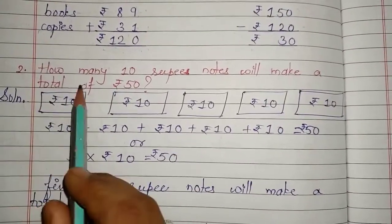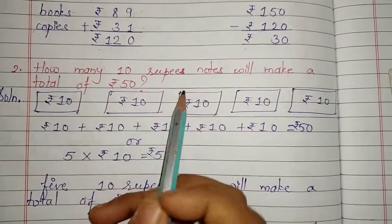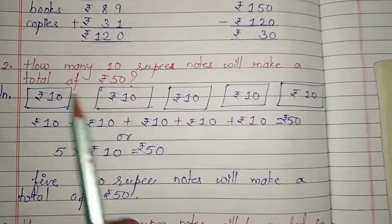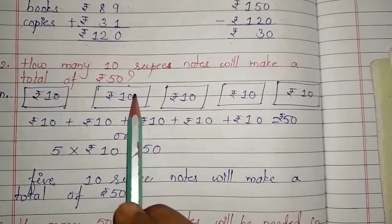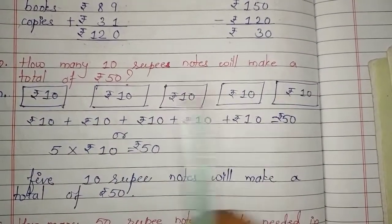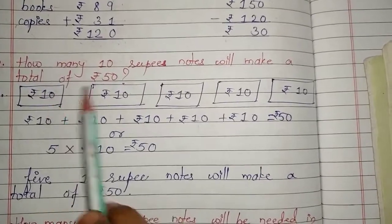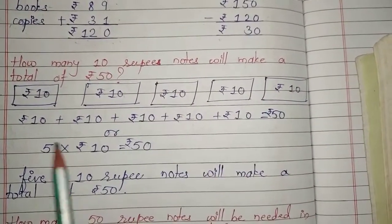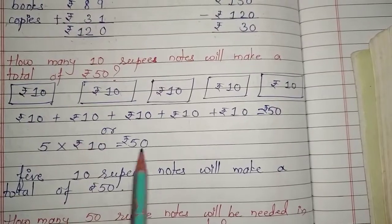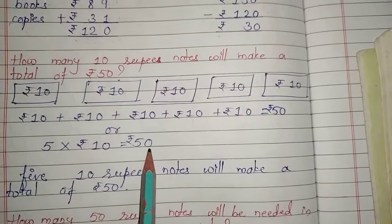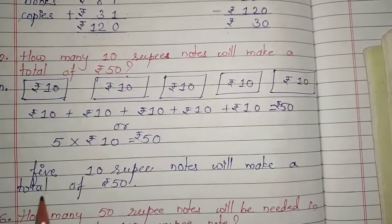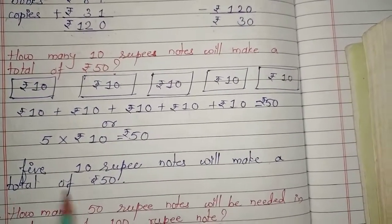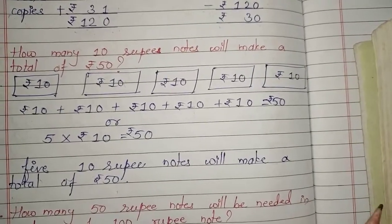Question number two: how many 10-rupee notes will make a total of 50 rupees? Let's take 10-rupee notes: 1, 2, 3, 4, 5 — that's 10, 20, 30, 40, 50. Five 10-rupee notes will make a total of 50 rupees. This was a really easy question.